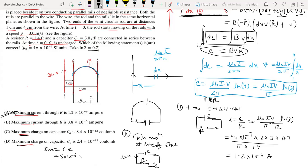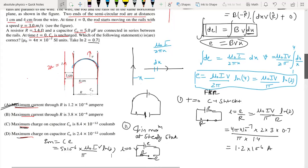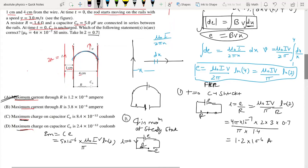With E = (μ₀Iv/π)×ln(2), substituting all values gives Q_max = 8.4×10⁻¹² C. So option C is correct. You can verify this calculation.